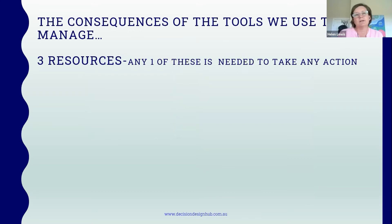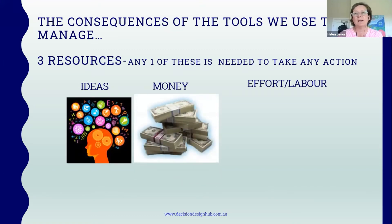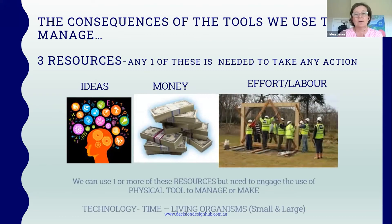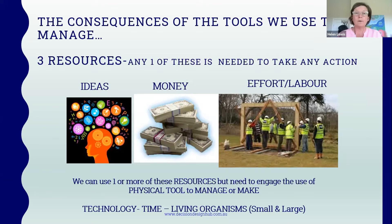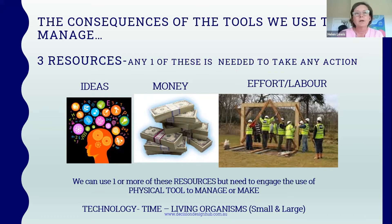When we consider the consequences of the tools we use to manage, we have three resources: ideas and human creativity, money, and effort and labor. To actually make any change, we pick up a physical tool, which falls into one of three groups: technology, time, and living organisms. These are the only three main tools available to us as humans to make an impact on the earth's surface and on those four functions for life.